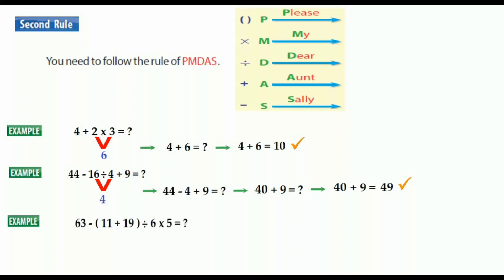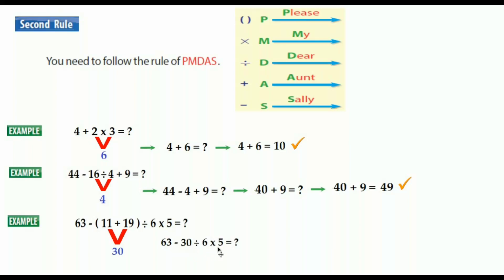Another question: 63 minus (11 plus 19) divided by 6 times 5. We have subtraction, addition, parentheses, division, and multiplication — five different things, not similar. We follow PEMDAS. First, do we have parentheses? Yes. So 11 plus 19 equals 30. The new question is 63 minus 30 divided by 6 times 5. Now subtraction, division, multiplication — three different things, not similar. We follow PEMDAS again.